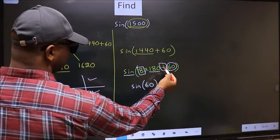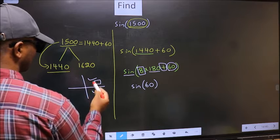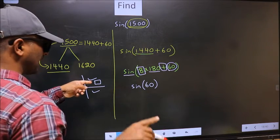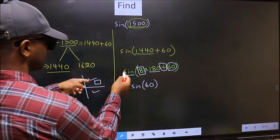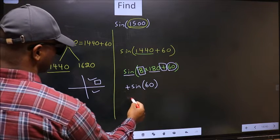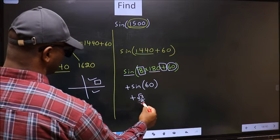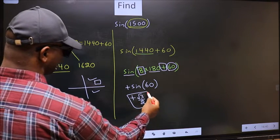Here we have plus. That means the angle lies in the first quadrant, and in the first quadrant, sine is positive. So we put plus. Plus sin(60) is √3/2. This is our answer.